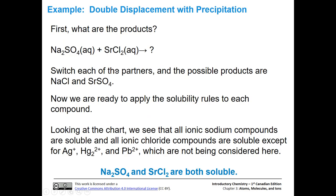Let's look at an example. We take our reactants - both in aqueous solution, meaning they're both soluble and dissolve into ions in solution. After we do our switcheroo for the possible products, sodium is going to pair with chloride giving sodium chloride, and sulfate is going to pair with strontium giving strontium sulfate. Now we'll look at the solubility rules to see if one or both of those compounds are soluble.